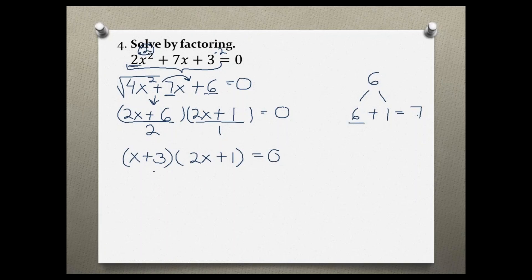Now we can use the zero product rule and set each binomial equal to 0 to find our solution. x + 3 = 0 and 2x + 1 = 0. Solving for x, I'm going to subtract 3 from both sides, and that leaves me with x = -3. On the right side, I'm going to subtract 1 from both sides, I have 2x = -1, and then I'm going to divide by 2 on both sides, and my answer is x = -1/2.